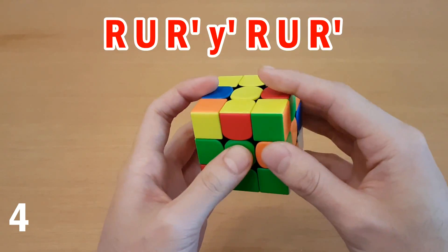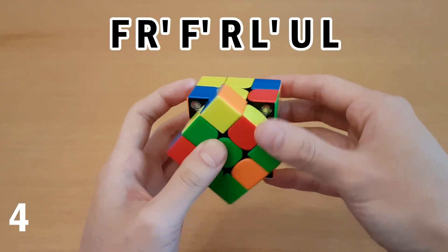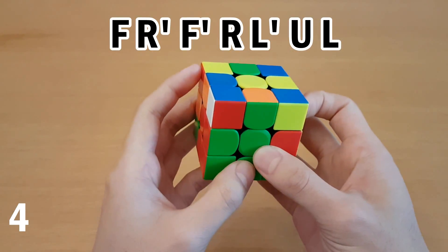Now for this case, which can be solved with intuitive F2L by taking it out and then inserting here, instead here you can do hedge or reverse sledgehammer, and that pairs them up to be inserted without a rotation.